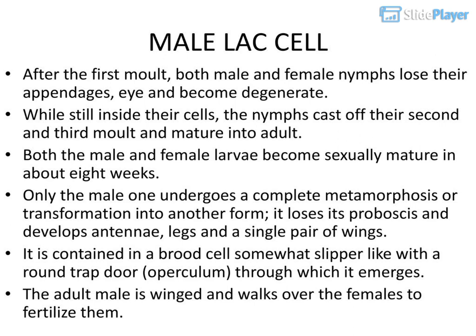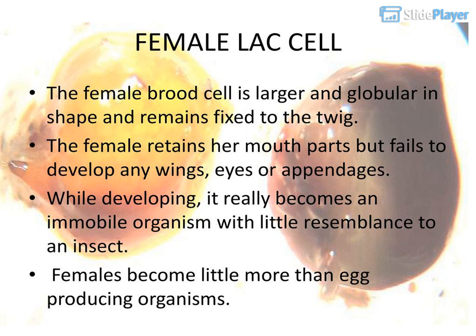Both the male and female larvae become sexually mature in about 8 weeks. Only the male undergoes a complete metamorphosis — it loses its proboscis and develops antennae, legs, and a single pair of wings. It is contained in a brood cell, somewhat slipper-like, with a round trap-door called a perculum through which it emerges. The adult male is winged and walks over the females to fertilize them.